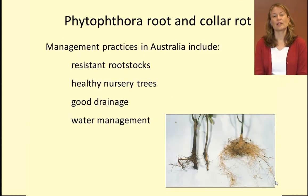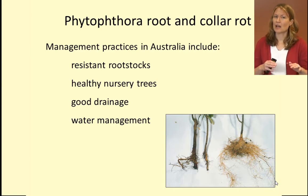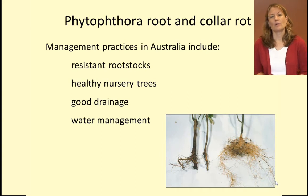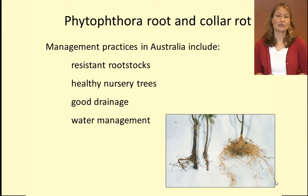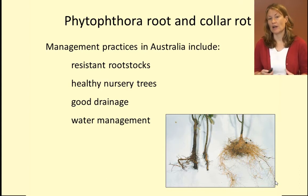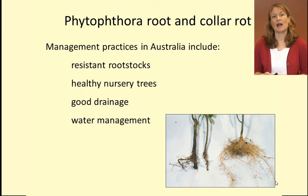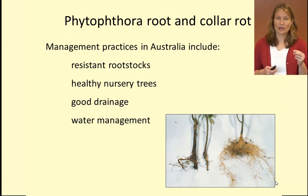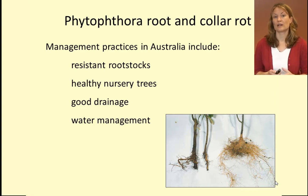There is Phytophthora root and collar rot, where the root system and the base of a tree can start to rot away. Phytophthora root and collar rots are managed in Australia by growing trees on resistant or tolerant rootstocks, growing healthy nursery trees that can fight disease, ensuring that the growing media has good drainage, and managing water sources — because the Phytophthora spores that cause disease are carried in water. So we treat our water via sand or chlorine treatment.